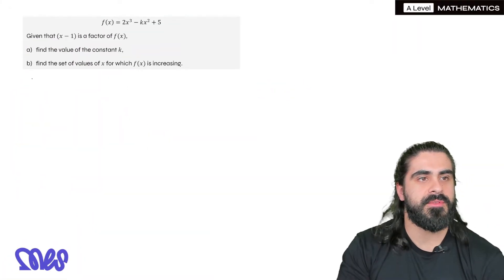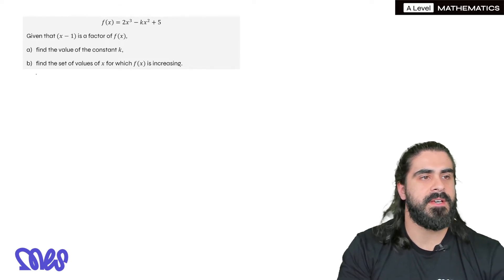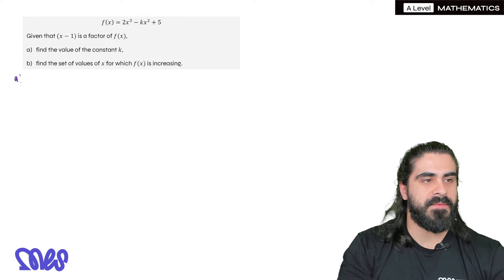Okay here's an example. So f(x) is 2x³ - kx² + 5. Given that x - 1 is a factor of f(x), find the value of the constant k. So there's some factor theorem.